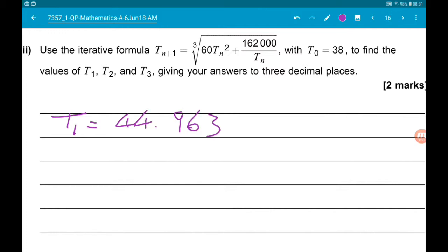Press equals again, and you will get t2 is 49.987. Press equals again, and you will get t3 is 53.504. Cool.